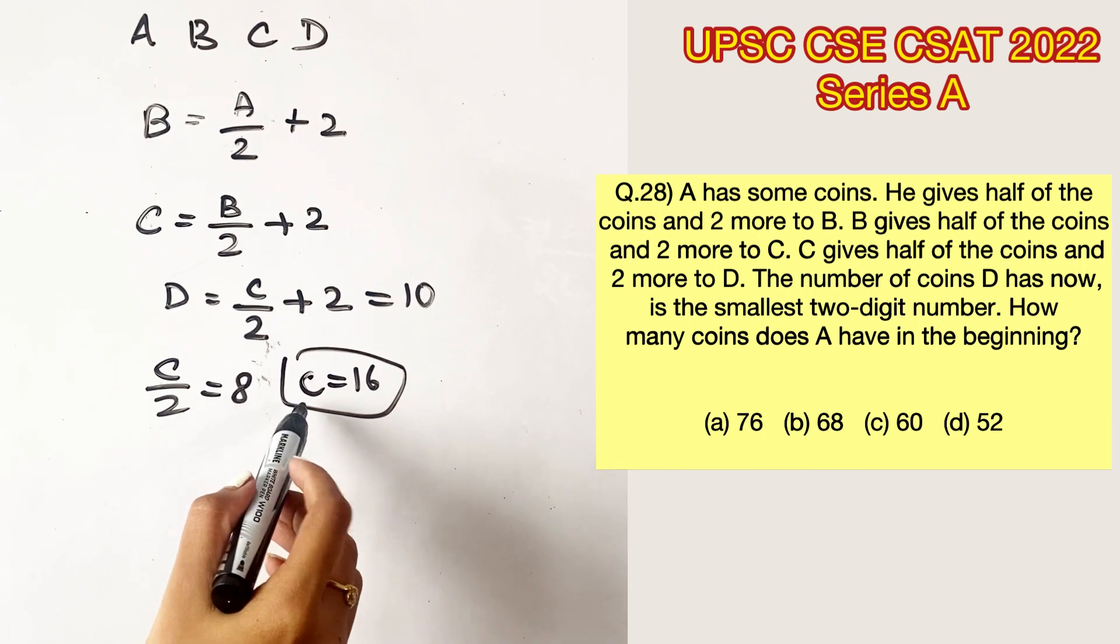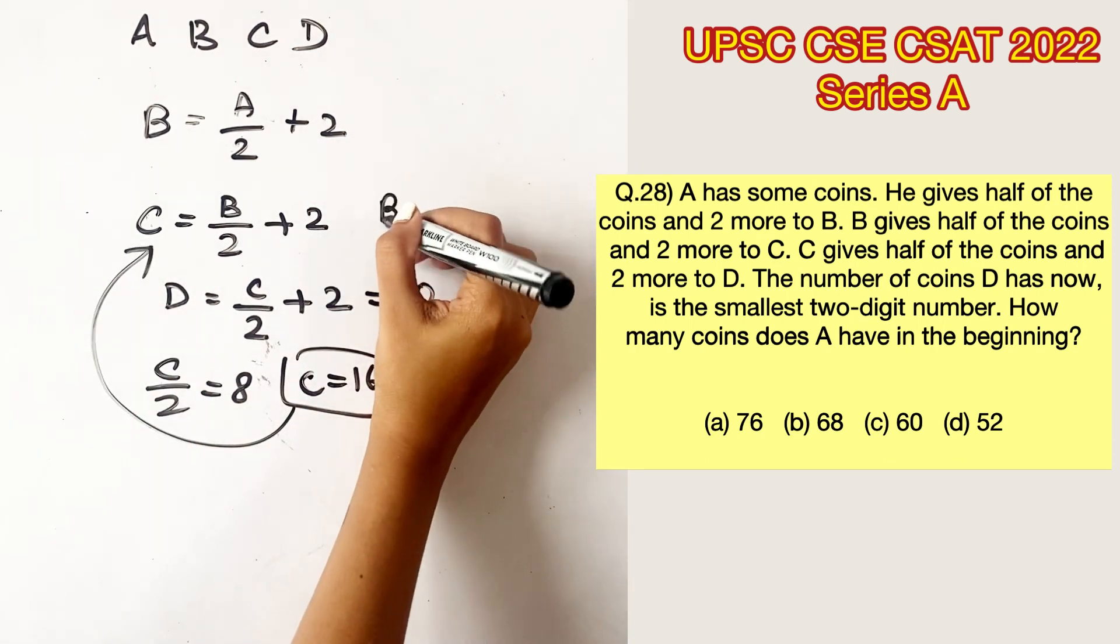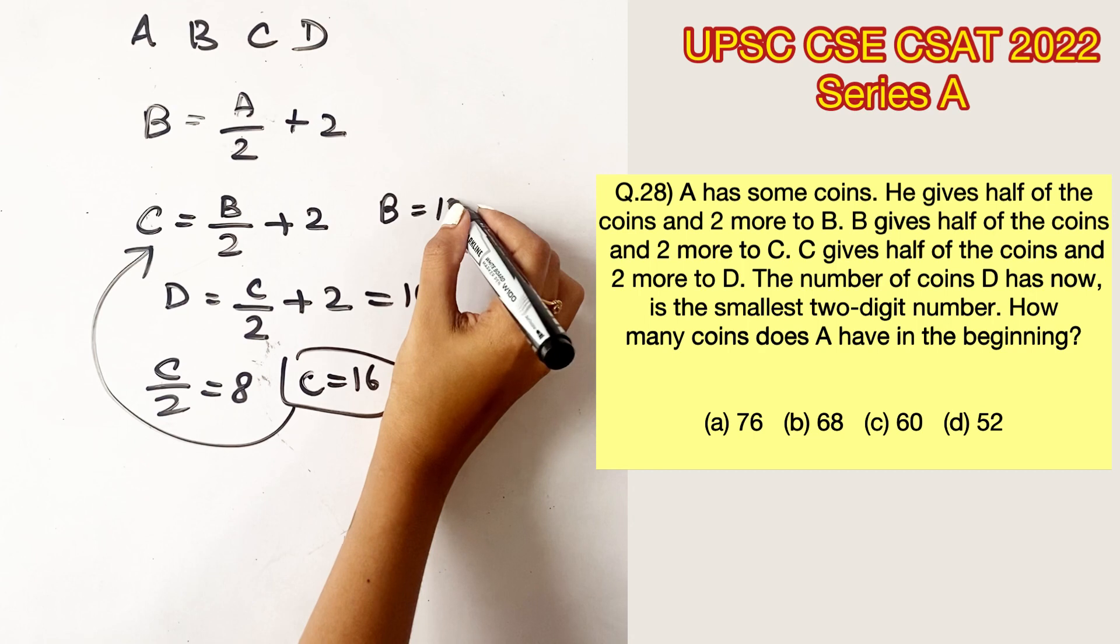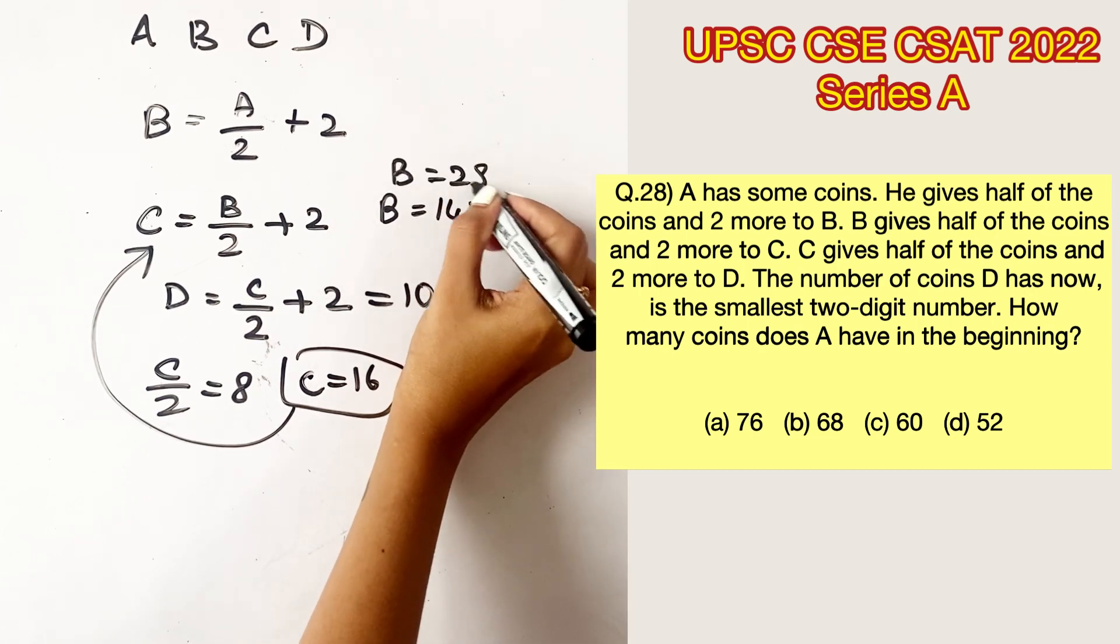Now we can substitute the value of 16 in this equation. This will become B equals 14 times 2, which is B equals 28.